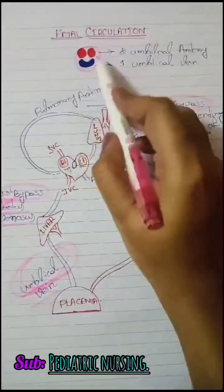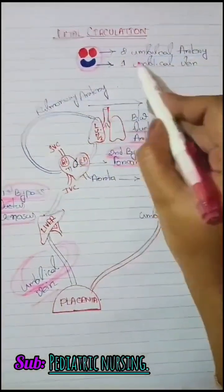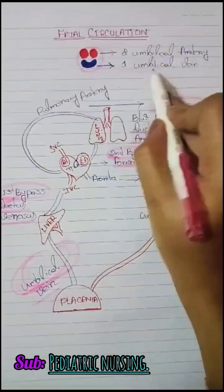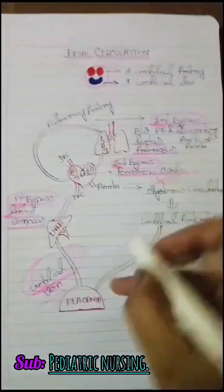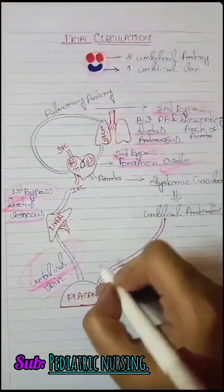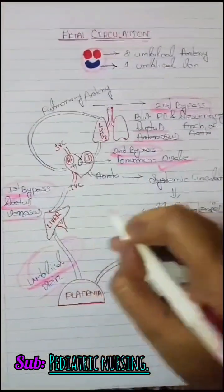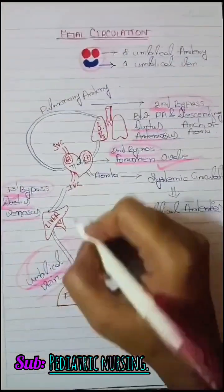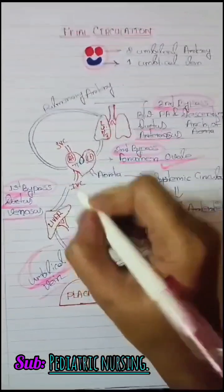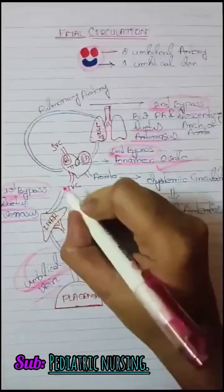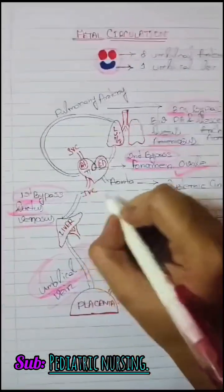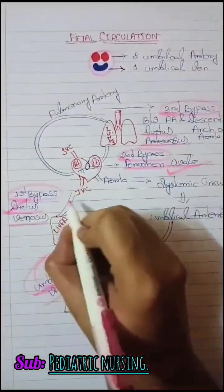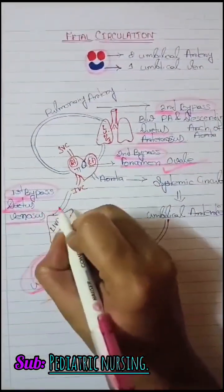Fetal Circulation. The umbilical cord consists of two umbilical arteries and one umbilical vein. The placenta passes the oxygenated blood via the umbilical vein to the liver of the baby. Then the blood goes to the inferior vena cava by the first bypass called the ductus venosus.